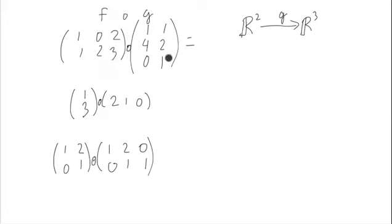So what is f going to do? f is going to go from R3, and it's going to land in R2. So our composition goes from R2 to R2.